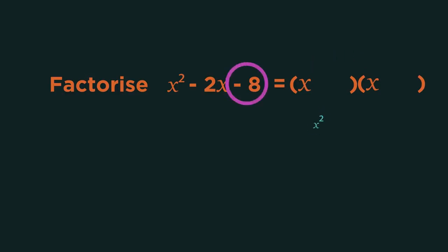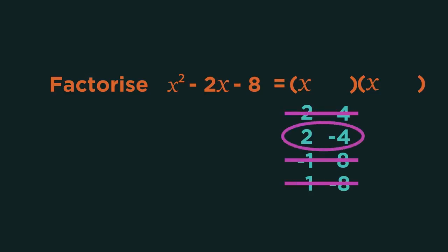Now look at this number. What multiplies to give negative eight? Two and four and one and eight. Now, which combination of those add to give minus two? Plus two minus four gives us minus two.